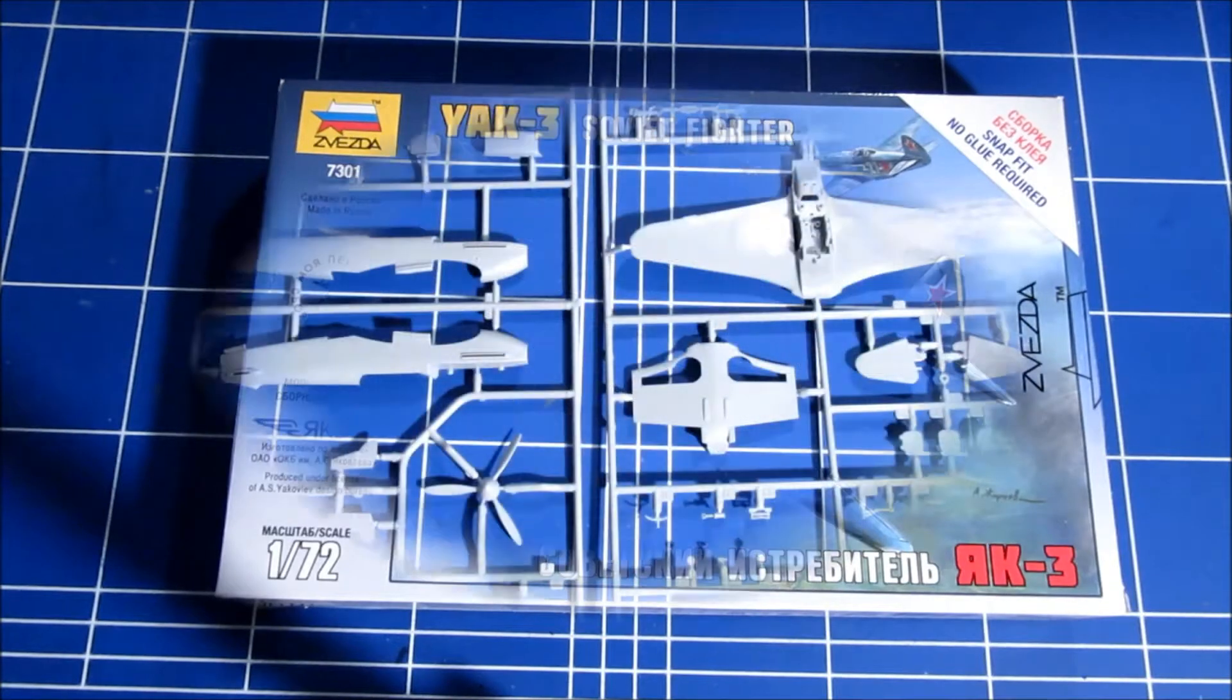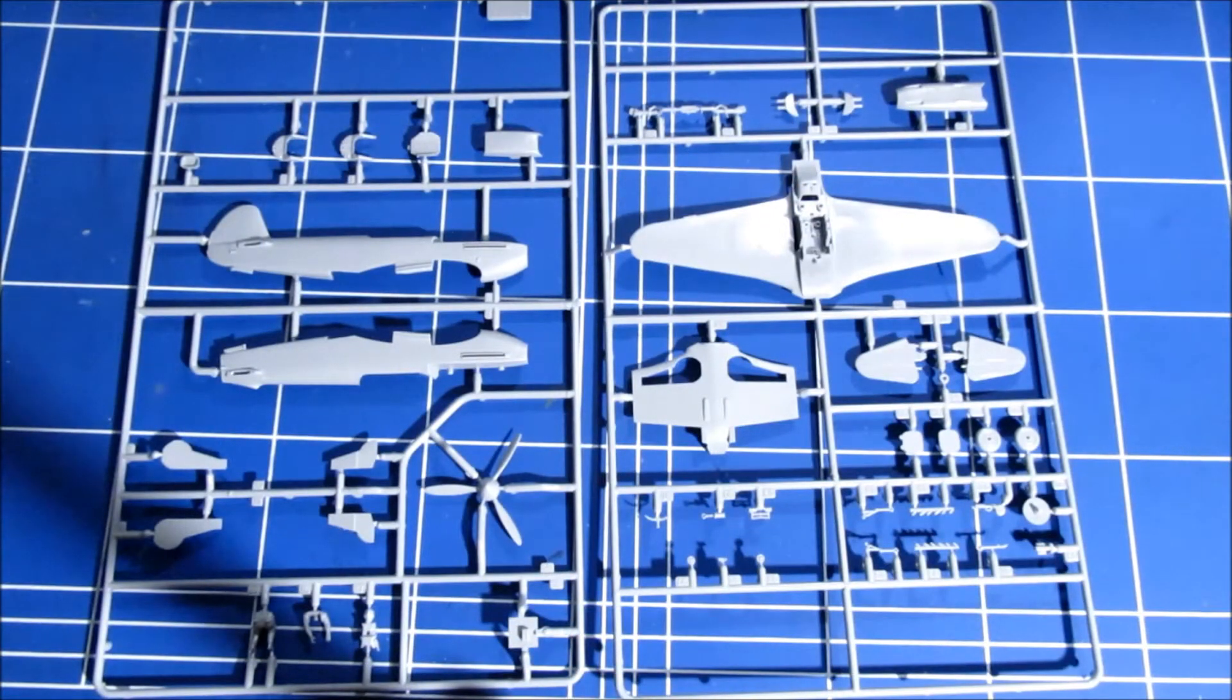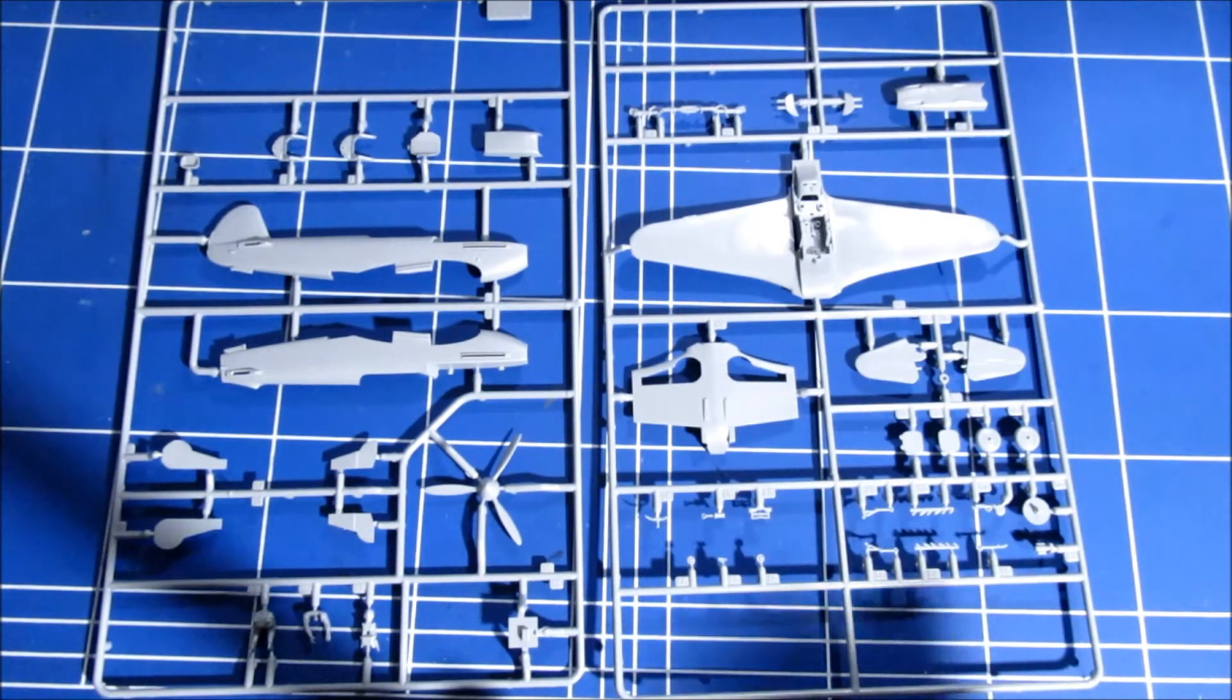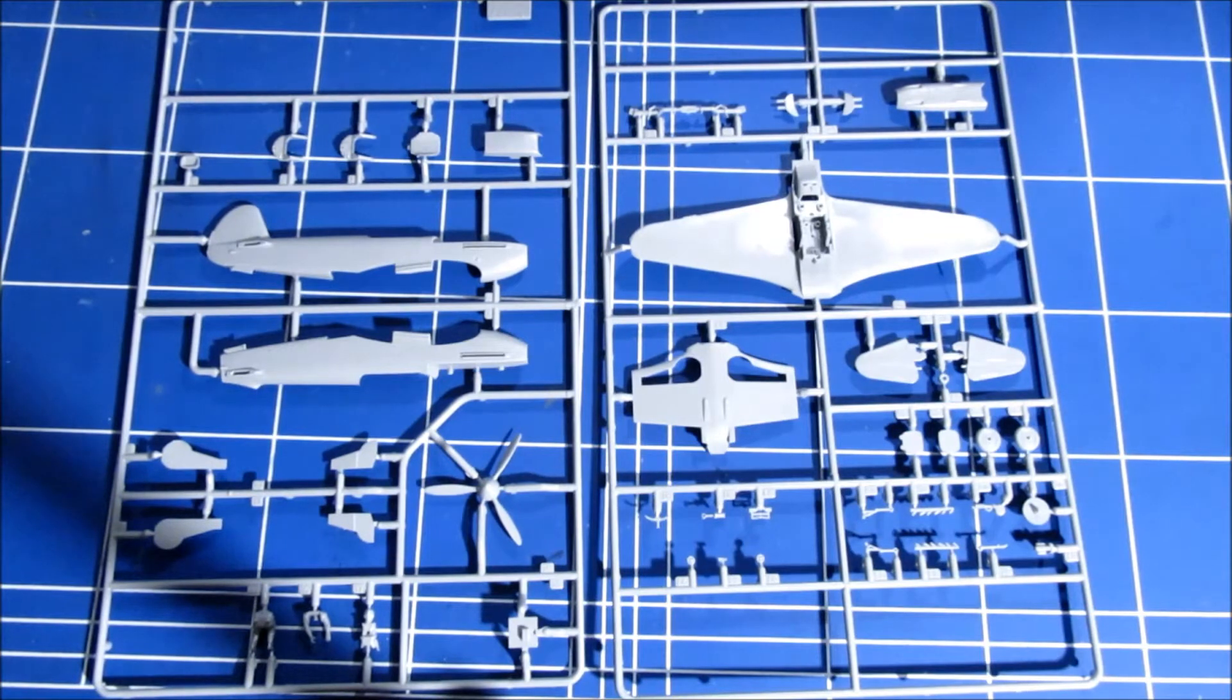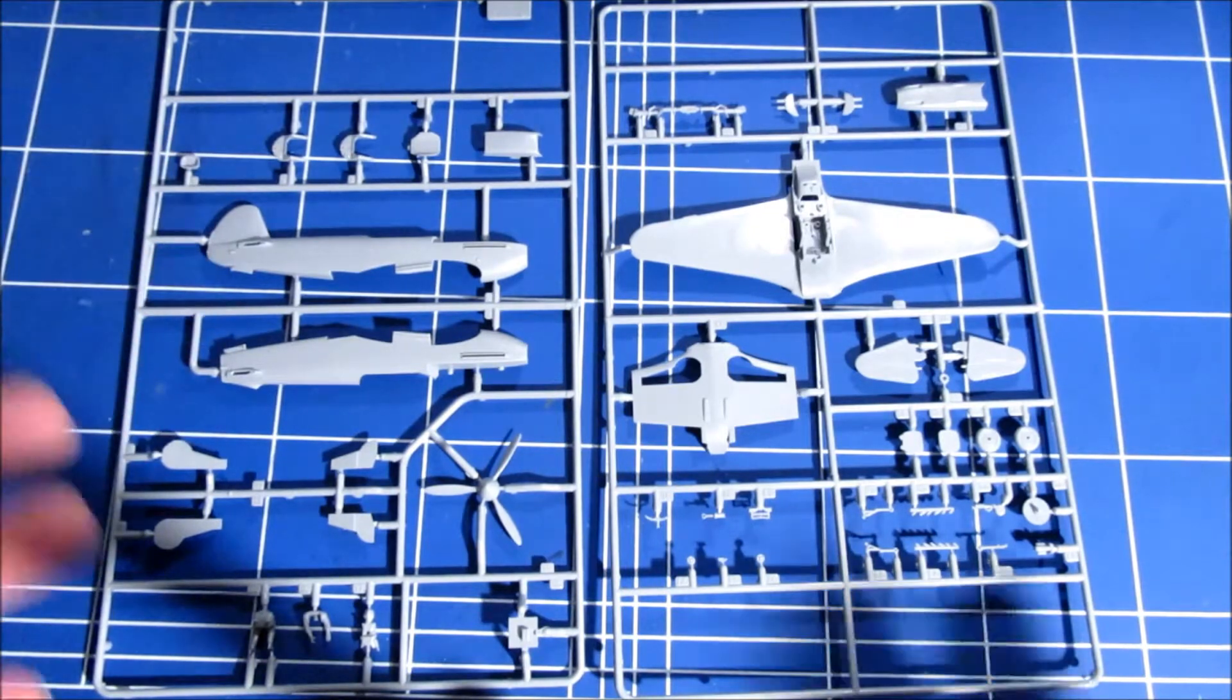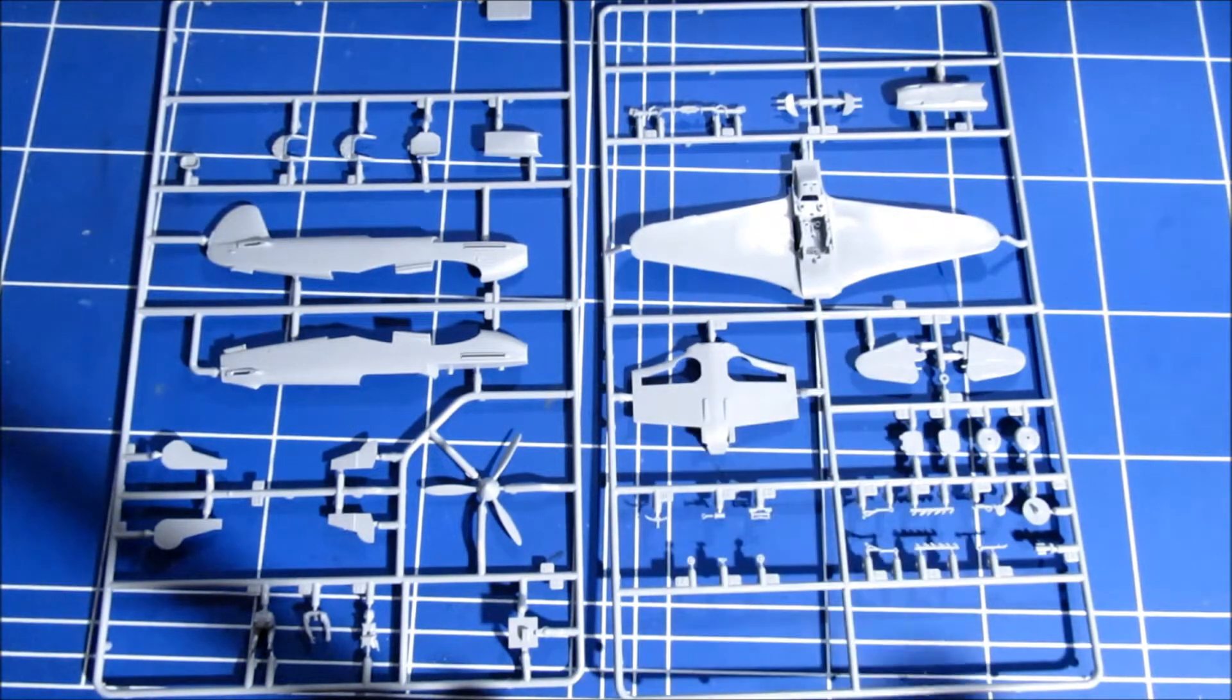Let's have a look inside. So here we have the main sprue. And the first thing you can see is that it looks just like a normal kit. A normal 1/72 scale kit. And this is a snap fit kit. It doesn't look toy-like at all.